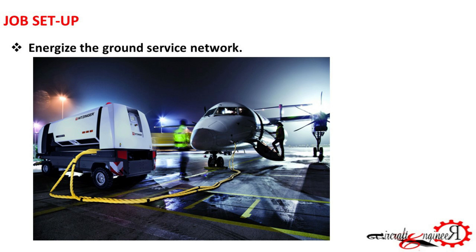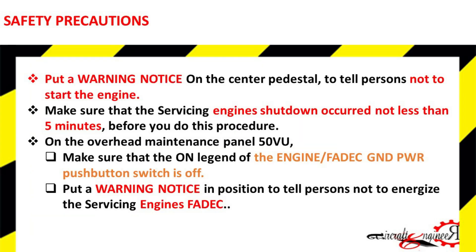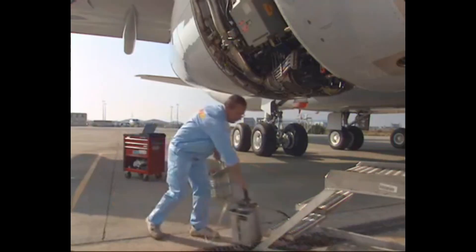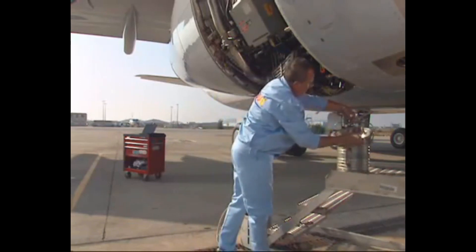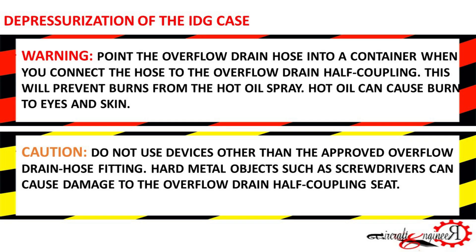Job setup: energize the ground service network. Safety precautions: put a warning notice on the center pedestal to tell persons not to start the engine. Make sure that the servicing engine's shutdown occurred not less than 5 minutes before you do this procedure. On the overhead maintenance panel 50VU, make sure that the on-legend of the engine/FADEC GND PWR pushbutton switch is off. Put a warning notice to tell persons not to energize the servicing engine's FADEC. Place a container under the IDG to collect the oil that overflows during servicing and depressurization of the IDG case.